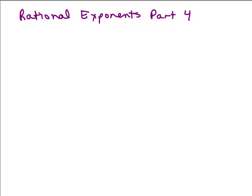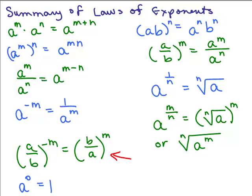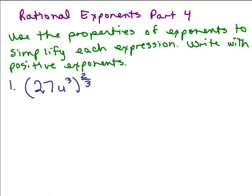This is Part 4 of Rational Exponents and we're just going to work through more problems. Just a reminder about some of the laws of exponents we've used along with the new ones on rational expressions. We're going to use the properties of exponents to simplify each expression and only write with positive exponents.